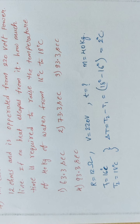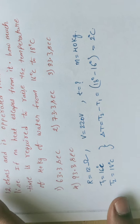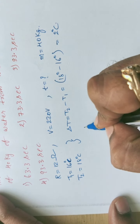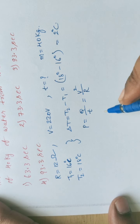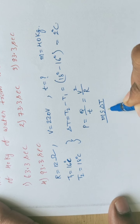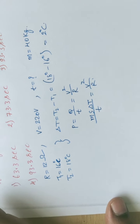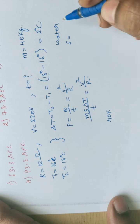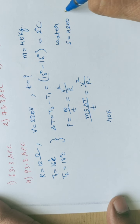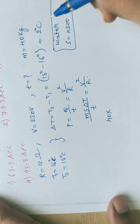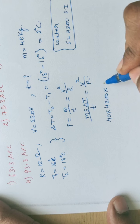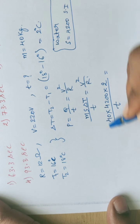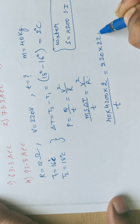We want to find time t. Recall P equals Q by t equals V squared by R. So ms delta T divided by t equals V squared by R. For water, s equals 4200 J per kg per kelvin. Substituting: mass 40, s 4200, delta T 2, divided by t equals 220 squared divided by 12.